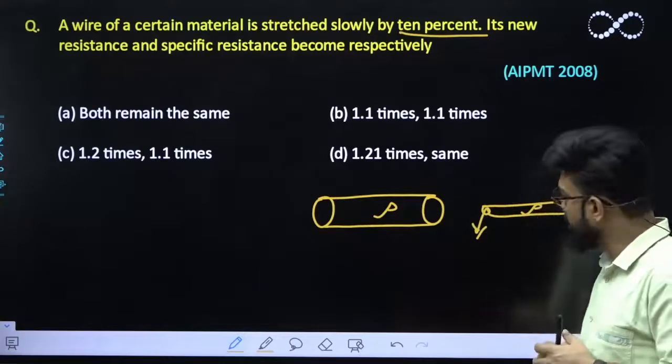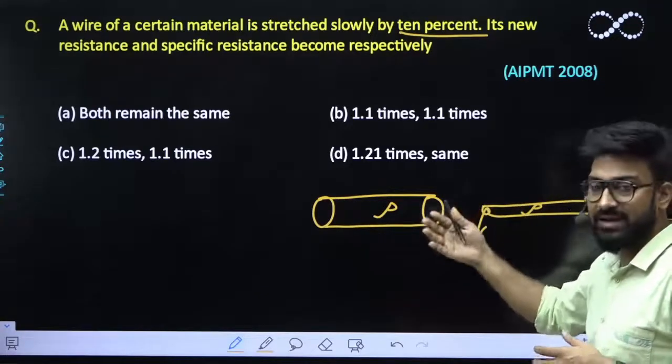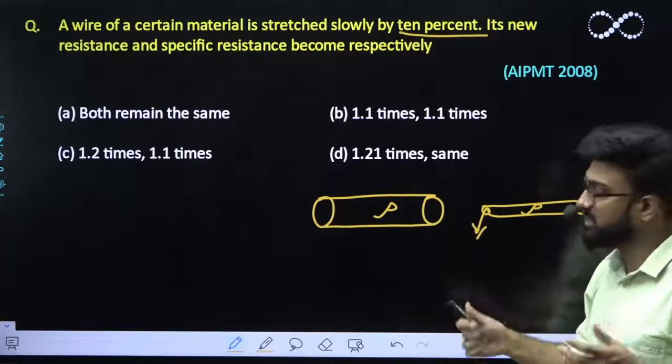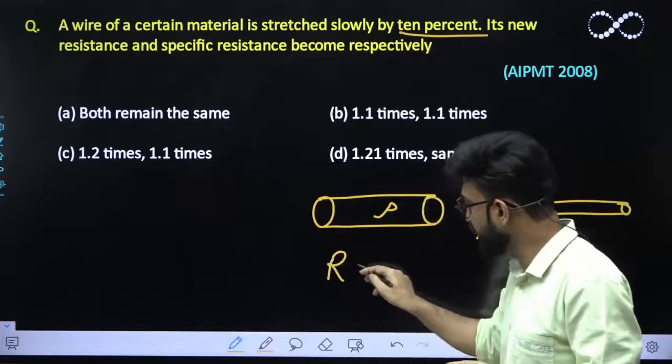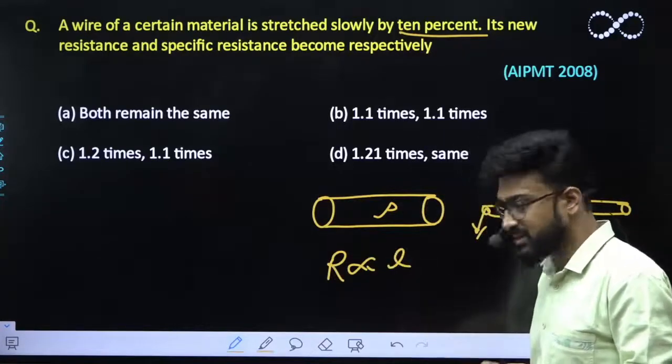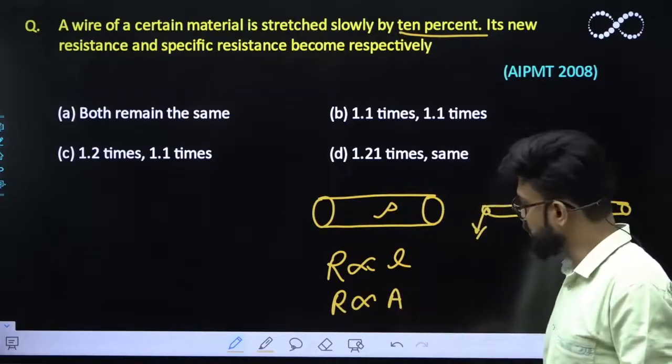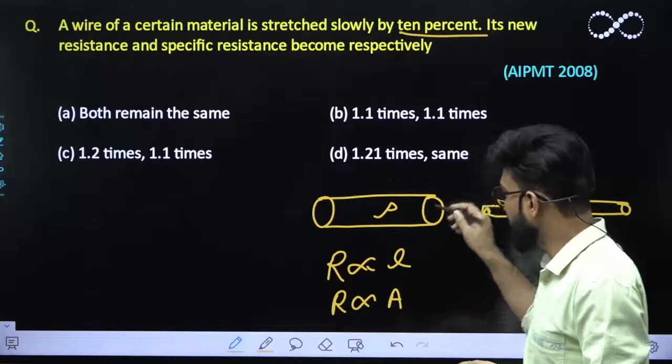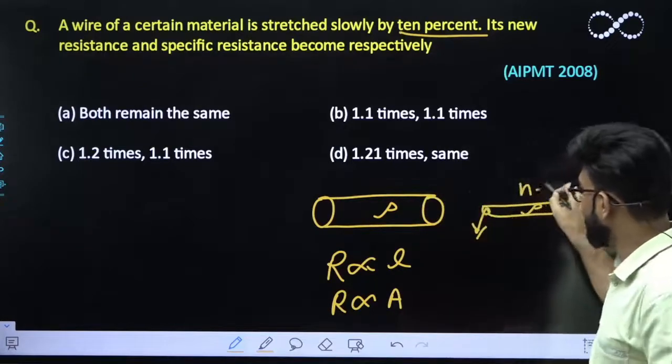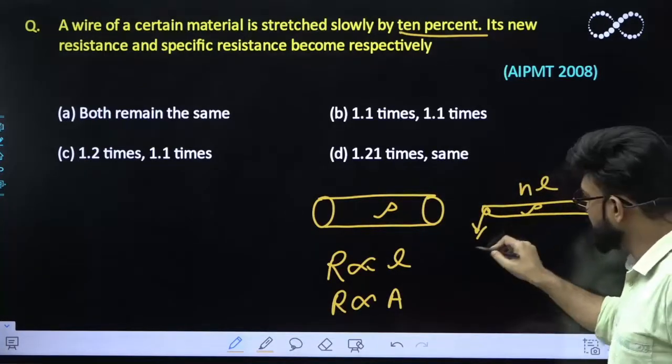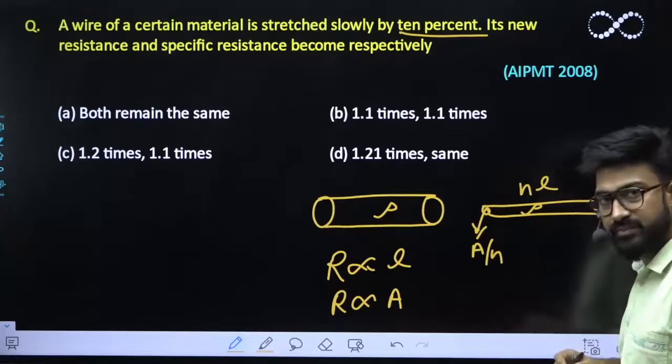If length increases then the resistance should also increase because we know that resistance is directly proportional to length and it is inversely proportional to area of cross section of this wire. If length increases, we know that if length increase by n times then area should decrease by 1 by n times.